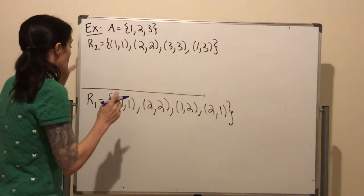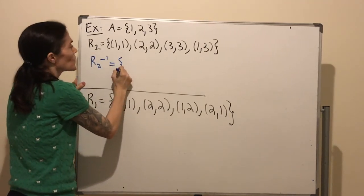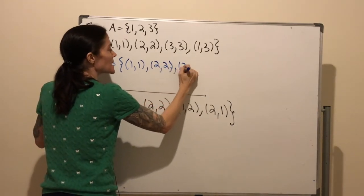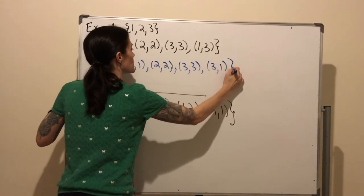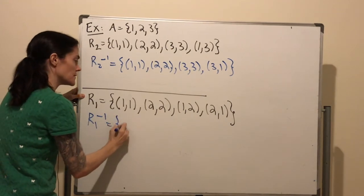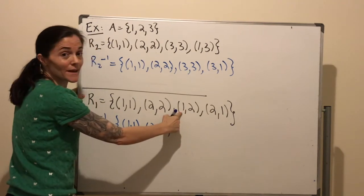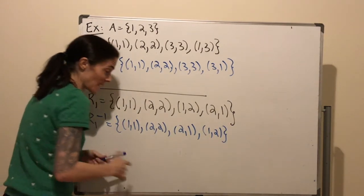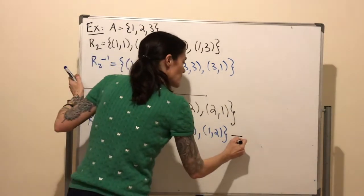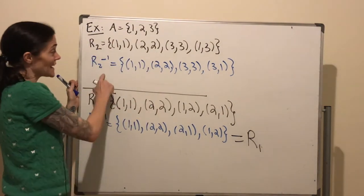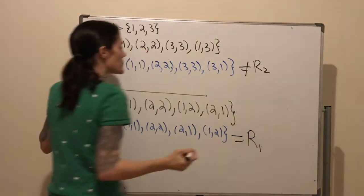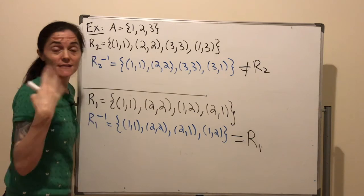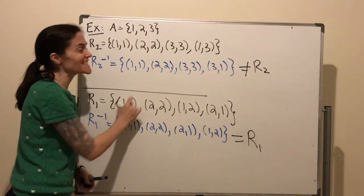As a quick example, back to these two relations. For R2 inverse: interchanging coordinates for the first three pairs just gives the same elements back, but (1, 3) becomes (3, 1). For R1 inverse: we get (1,1), (2,2), then (1,2) becomes (2,1), and (2,1) becomes (1,2). Notice: R1 inverse equals R1 — the same relation — while R2 inverse is not equal to R2. We're about to prove that R equals R inverse if and only if R is symmetric. R1 was symmetric; R2 was not.